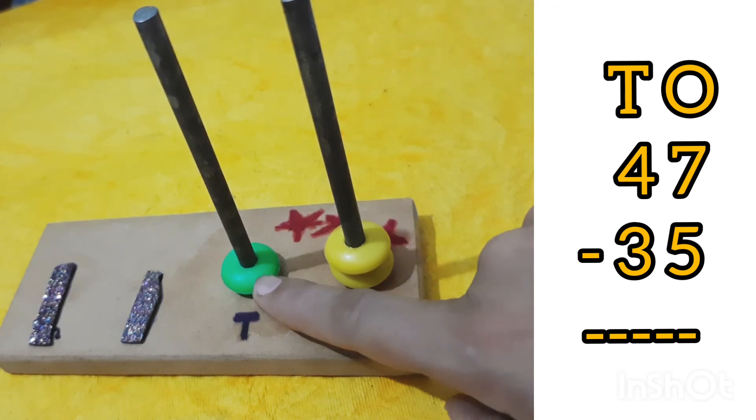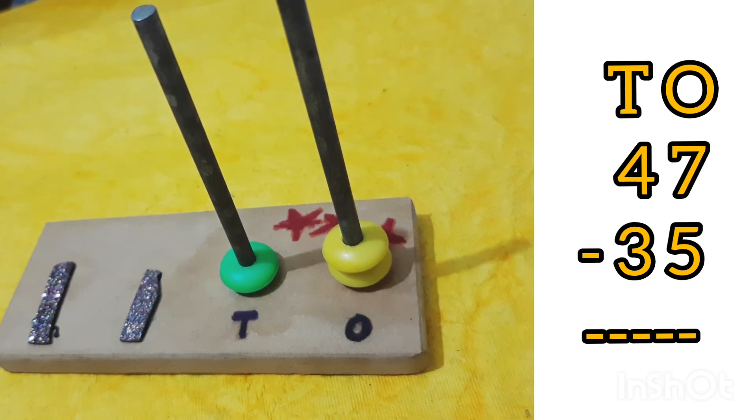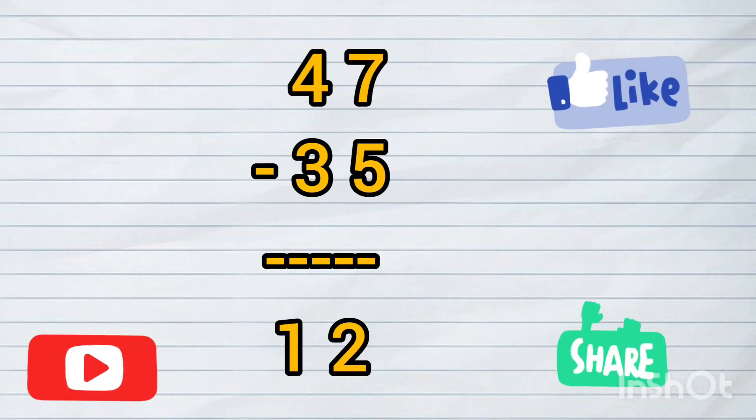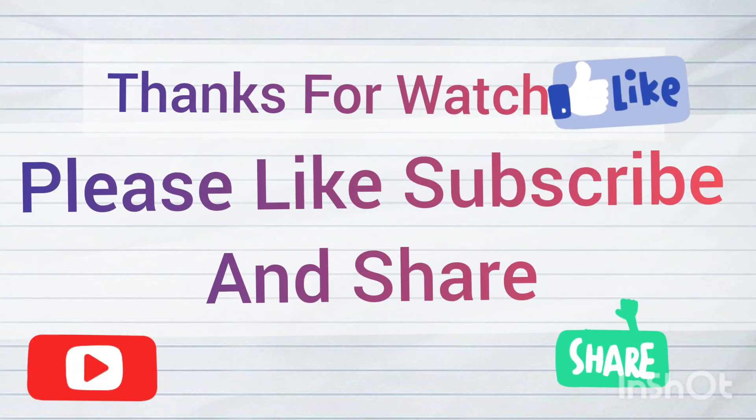Now count the remaining beads: 1 at the tens place and 2 at the ones place. So 47 minus 35 equals 12. I hope you understand. Thanks for watching.